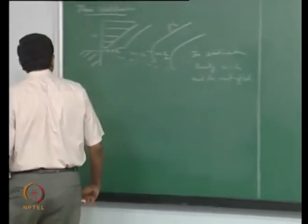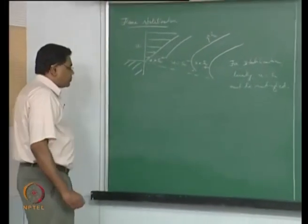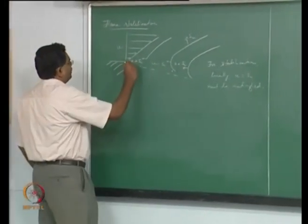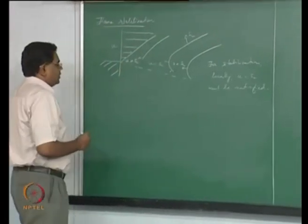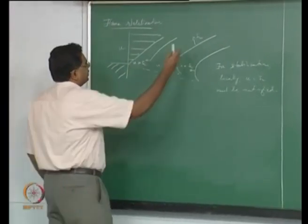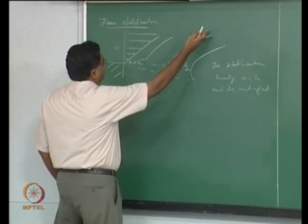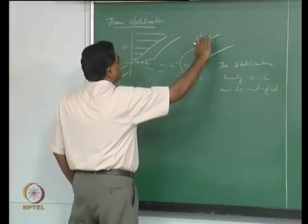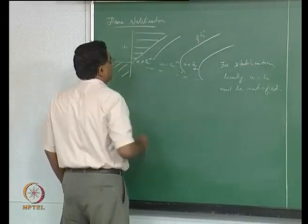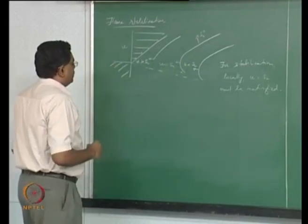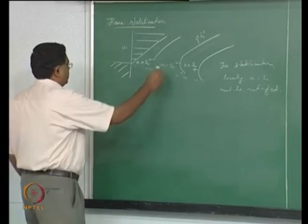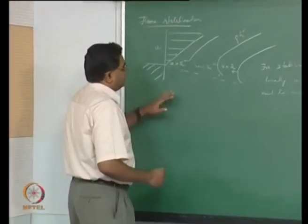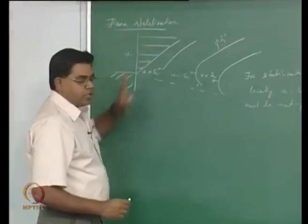We have been looking at how flame stabilization happens. Essentially, you have a linearly increasing velocity profile, but you also have a flame speed that continues to decrease from the value of SL0. It decreases because of heat loss to the burner as one effect, and the other effect is dilution from the ambient.